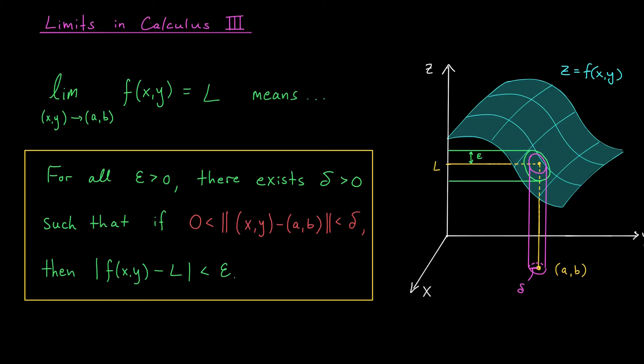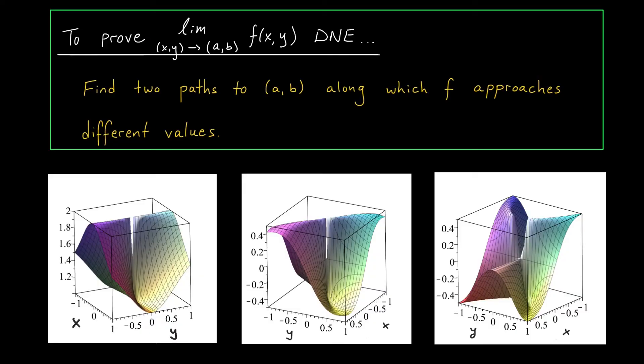In fact, if you're up for a little challenge in using this definition, try to prove that when a multivariable limit exists, it must be unique. The function cannot possibly approach two different values as XY gets close to AB.